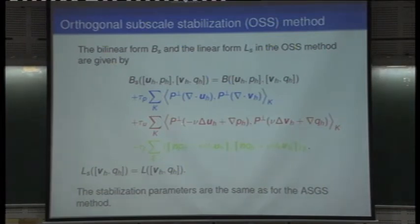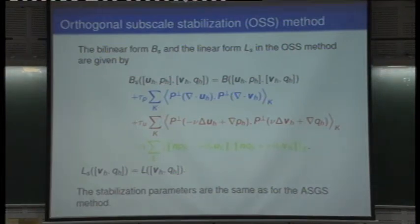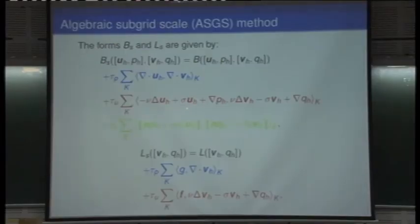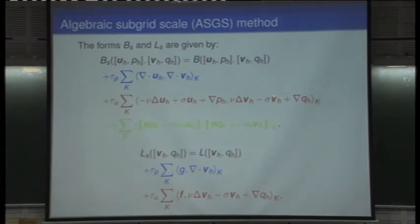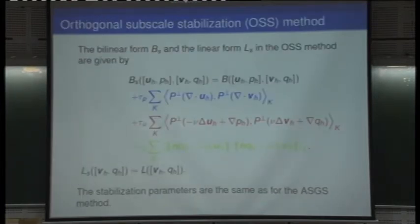As a result, the term of order zero does not appear, because the orthogonal projection of a function that already belongs to the finite element space is obviously zero. Sigma u_h belongs to the finite element space, so its orthogonal projection is zero. This is the final form of the method, and the stabilization parameters are the same as for the algebraic subscale method.